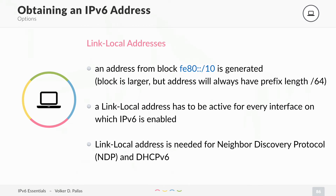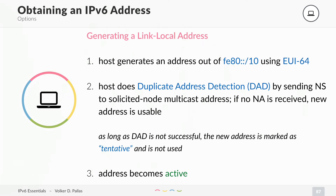So how do you generate a link-local address? Your host will first generate an address out of this prefix using a process called EUI-64, which I will explain later. Once you have a link-local address on your interface, the host will do a Duplicate Address Detection (DAD) by sending a neighbor solicitation to the solicited-node multicast address for your specific address. It sends a message to this multicast address asking if anybody has a MAC address for this address. If there is no neighbor advertisement received, you know that no neighbor is using this same address.